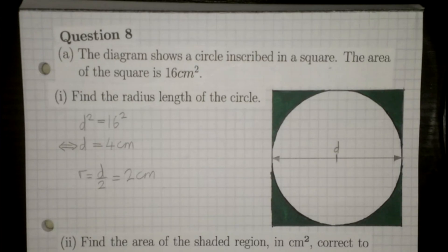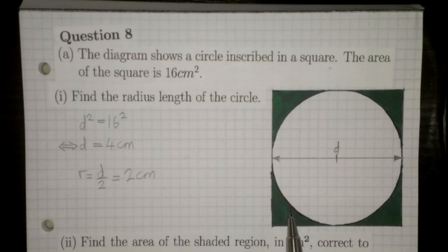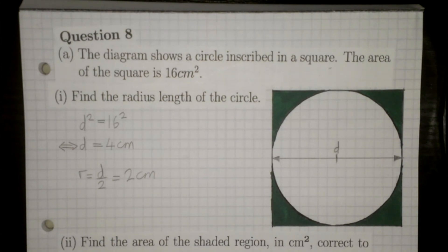Here's question 8. You're given a diagram of a circle inscribed inside a square. You're told the area of the square is 16cm² and you have to find, first of all, the radius length of that circle.